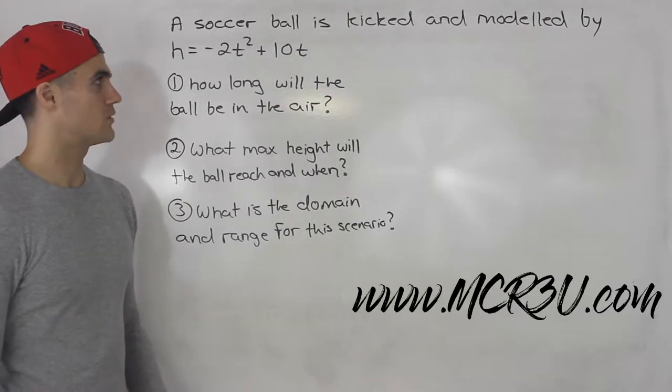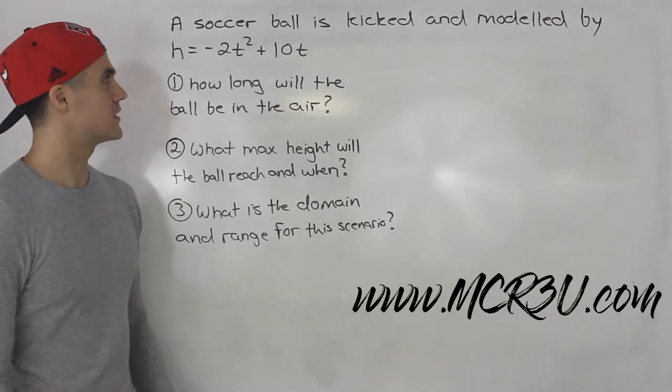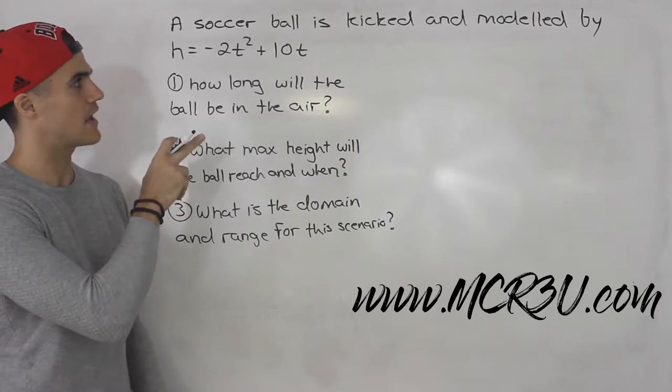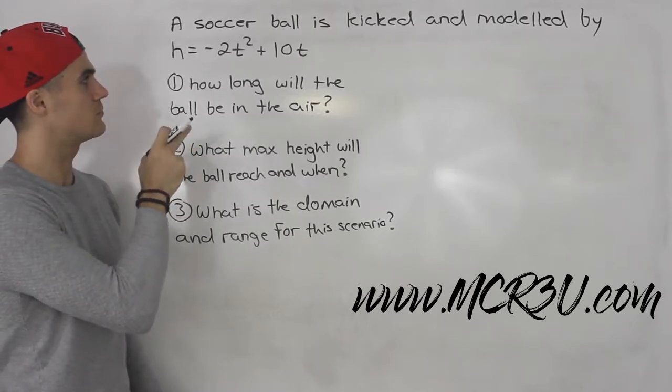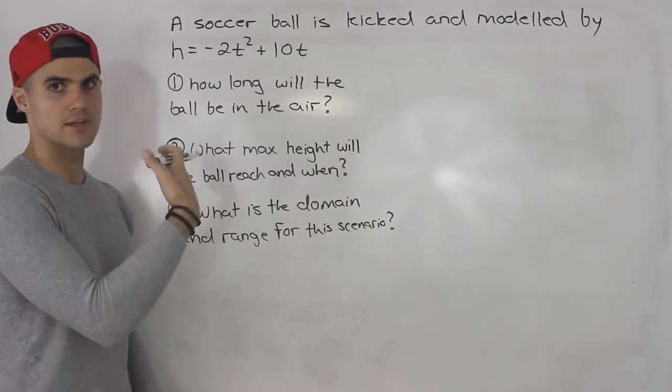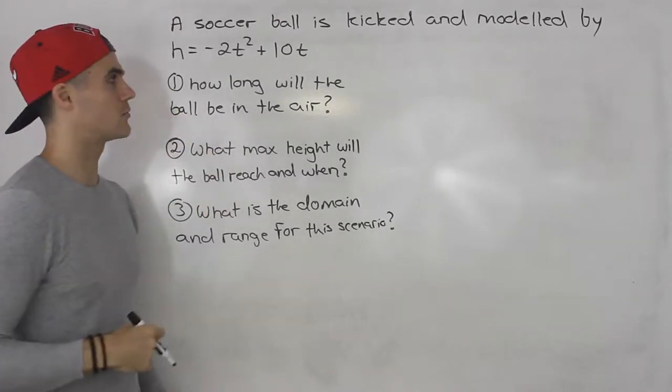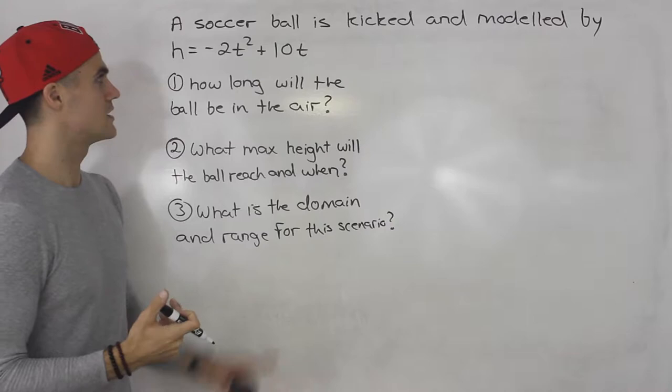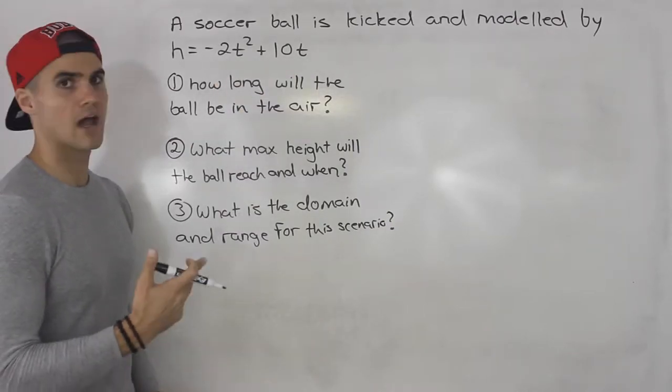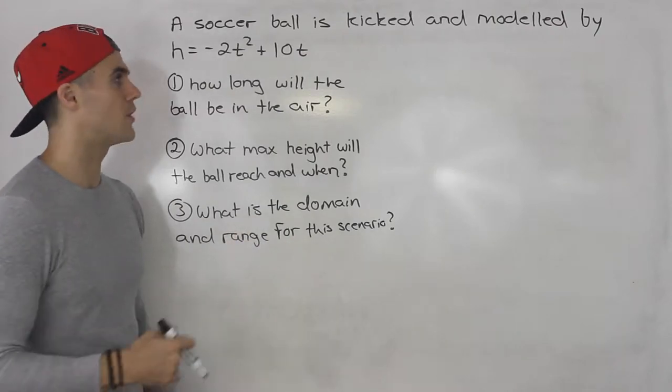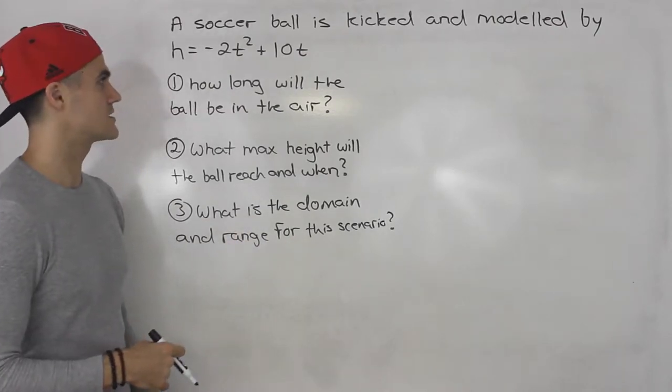Moving on with the quadratics chapter, we're going to do a word problem in this video. So a soccer ball is kicked and modeled by h equals negative 2t squared plus 10t. So h is the height of the soccer ball in meters.